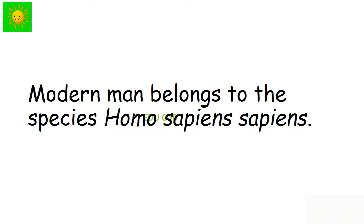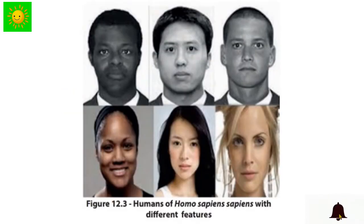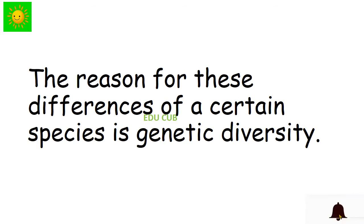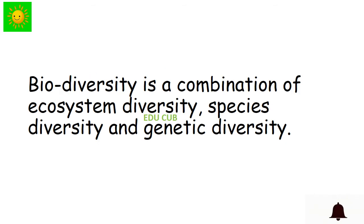Modern man belongs to the species Homo sapiens sapiens. Through the above activity, you would have understood that even within the same species, there are differences among the individuals. Now you can see humans of Homo sapiens sapiens with different features. You can understand the differences among these humans in this figure. The reason for these differences within a species is genetic diversity.